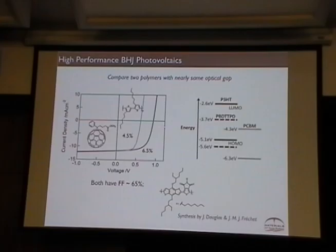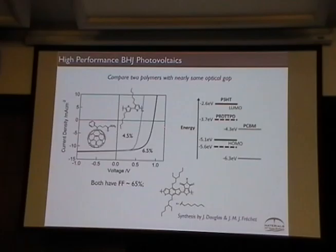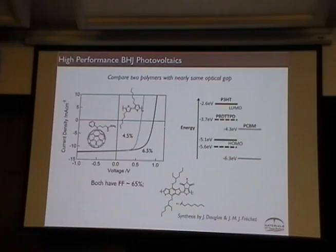Let's look at two cells: P3HT versus PBDTTPD — a material from Fréchet's group. What's nice is that the optical gap of these two materials are pretty close — about the same. They both work with C60 fullerene, but PBDTTPD has a deeper HOMO level. You get a 4.5% P3HT cell and a 6.5% PBDTTPD cell; the fill factors are about the same. This material is better because the open circuit voltage is pushed out. They both have about the same short circuit current because the optical gap is about the same. This is a toy model to compare two materials with the same optical gap but different HOMO levels.